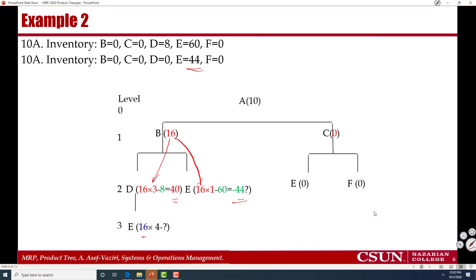And therefore here I have 16 times 4. Is that correct? Do I need 16 times 4? No. Because for each D I need 3D. And for each D I need 4E. So this 16 cannot directly come from E.